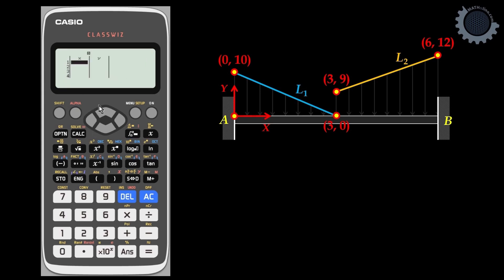Input the coordinates of line 1: 0 and 3. Navigate upward. We have 10 and 0. AC, option, then number 3, regression.